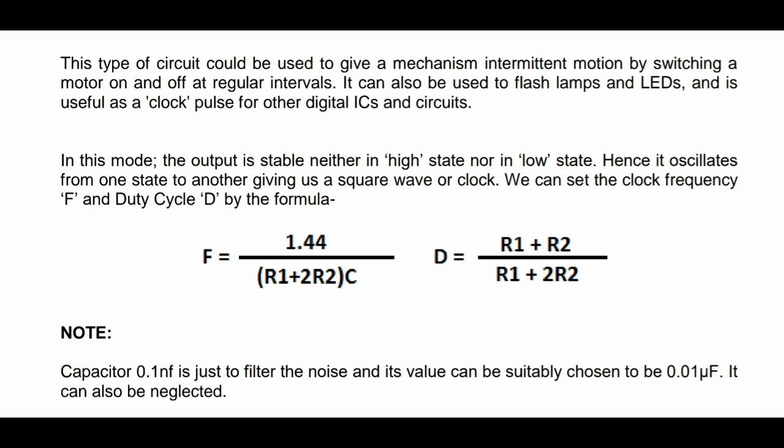This is the formula for frequency and duty cycle. You can change the frequency and duty cycle. Duty cycle means a pulse comes in two types — low and high — and you can change the bandwidth between positive and negative.